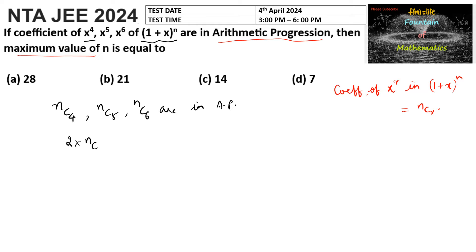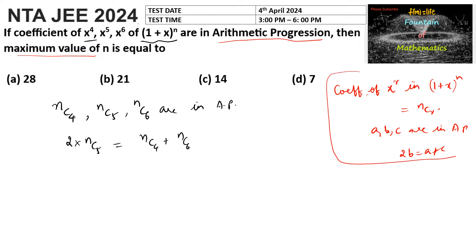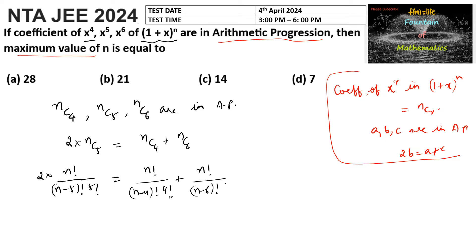So we write 2·nC5 = nC4 + nC6, since if a, b, c are in arithmetic progression then 2b = a + c. Expanding: 2·nC5 = 2·n!/(n−5)!·5!, nC4 = n!/(n−4)!·4!, and nC6 = n!/(n−6)!·6!, using nCr = n! / (r!·(n−r)!).